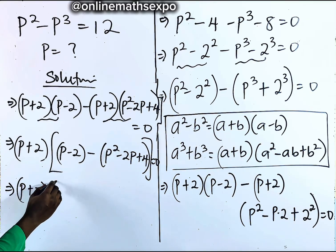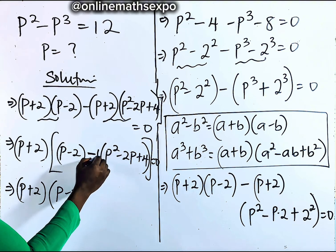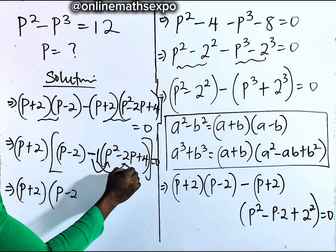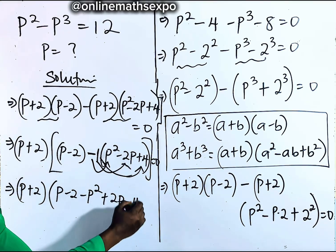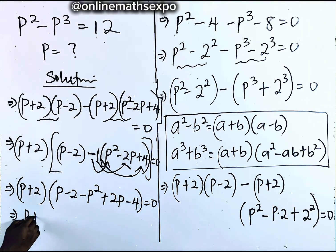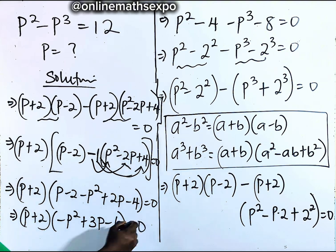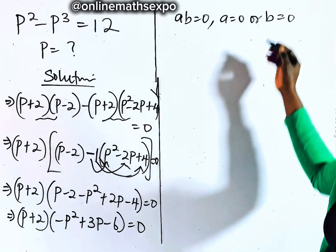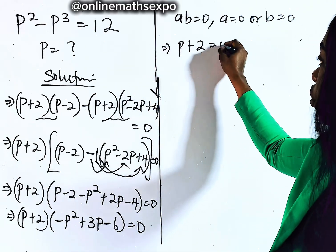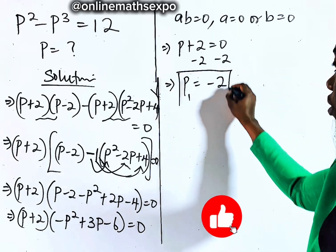Opening up the bracket with the negative sign, we collect terms: P plus two times negative P squared plus 3P minus 6 equals zero. Since for any product AB equal to zero, either A is zero or B is zero, we set P plus two equal to zero. Subtracting two from both sides gives P equals negative two. This is our first solution.